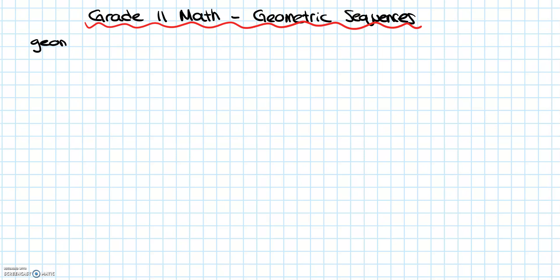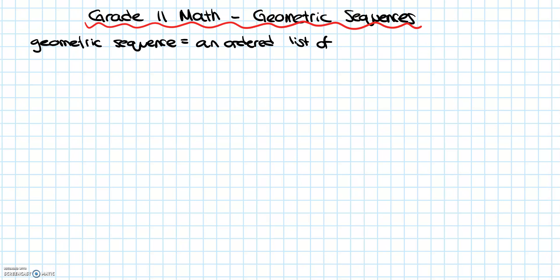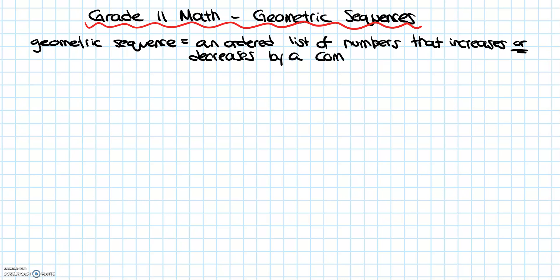A geometric sequence is an ordered list of numbers that increases or decreases by a common ratio. I'm just going to write that out now: it is an ordered list of numbers that increases or decreases by a common ratio. Now that we've written out this definition, I'm just going to underline it. You can keep that in your notebook for your own reference if you'd like.